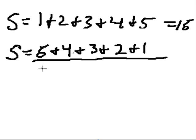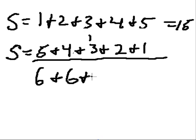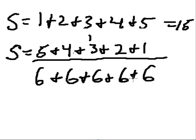1 and 5 is 6. 2 and 4 is 6. 3 and 3 is 6. 4 and 2 is 6. 5 and 1 is 6. All these pairs add up to 6!